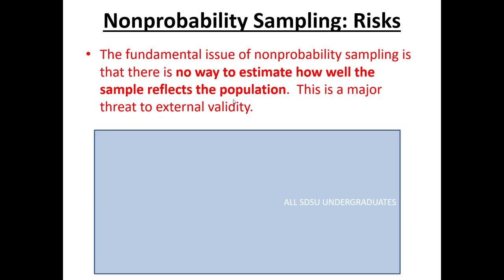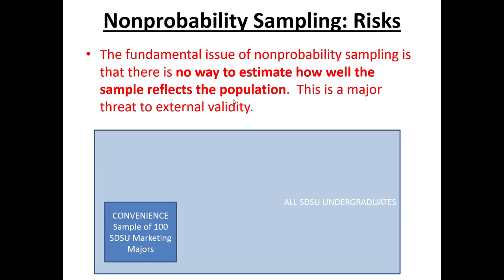For example, if our population of interest was all SDSU undergraduates and we did a convenience sample of 100 SDSU marketing majors, the issue isn't that we know those 100 marketing majors aren't representative — it's that we have no way of knowing for sure whether or not that convenience sample does or does not, or approximately or very distantly, reflect the overall SDSU undergraduate population. It's that uncertainty that's the issue — that inability to connect the ideas.